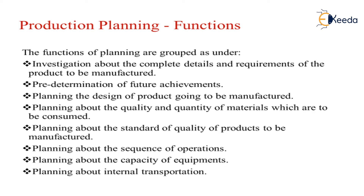For example, if we are planning to make a new model of mobile, the first investigation is what requirements current models are lacking in the present market. Then predetermining future achievements means deciding what features to include so that our sales will be high. Designing the product is the most important part, as design largely drives sales. The quality and quantity to be produced, the sequence of operations, the capacity of mobiles to be produced per set as per demand, and the transportation to be done are all functions of production planning.